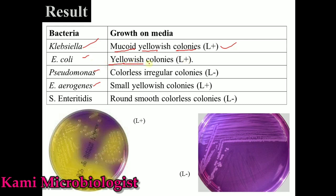E. coli produces yellowish colonies, so it is also lactose-fermenting. Pseudomonas produces colorless irregular colonies, meaning it is lactose-negative. Enterobacter produces small yellowish colonies, meaning it is lactose-positive. Salmonella and Shigella produce round smooth colorless colonies, meaning they are lactose-negative. As you can see in the picture, these are the lactose-negative and lactose-positive bacterial growths — the lactose-positive ones include E. coli, Klebsiella, and Enterobacter.